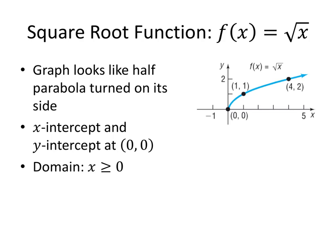Next up, we've got the square root function, f of x equals the square root of x. The graph kind of looks like the graph of x squared — well, half of it anyway — that's been turned over onto its side. The x-intercept and the y-intercept are both at the origin. This time we have a restricted domain: we can't take the square root of a negative number, so the domain is values of x greater than or equal to 0. This graph doesn't have any symmetry.